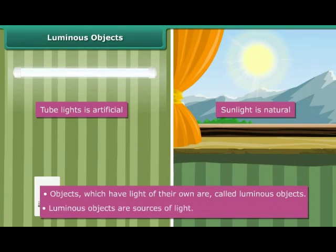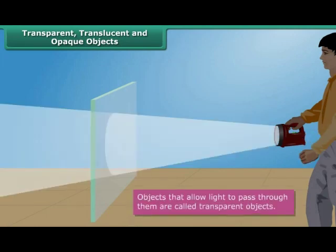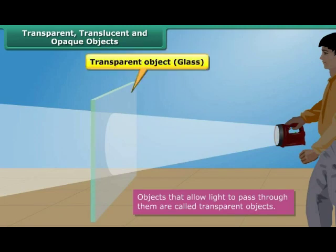Luminous objects are sources of light. Objects are classified as transparent, translucent, or opaque depending upon their treatment of light. Objects that allow light to pass through them are called transparent objects. Most of the light falling upon a transparent object passes through it to the other side, thereby allowing us to see through them. Glass, clean air, pure water, etc. are examples of transparent objects.